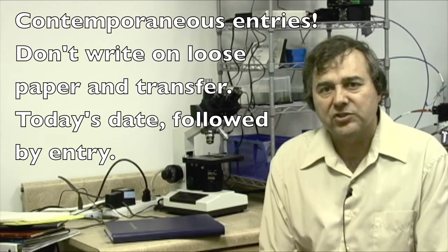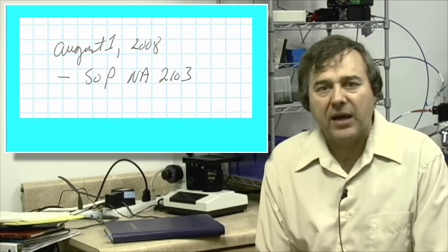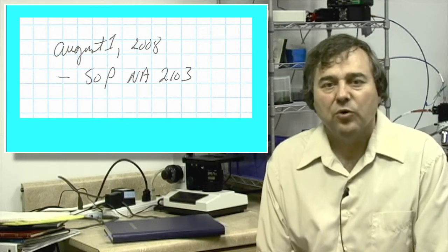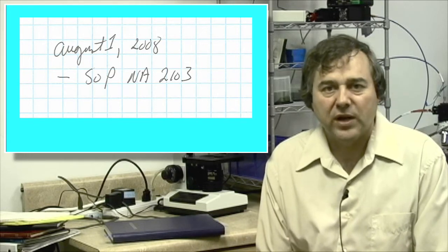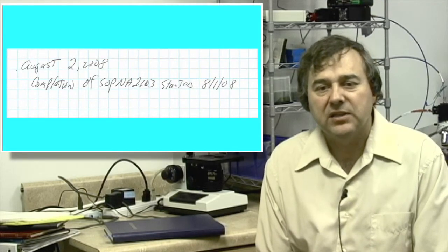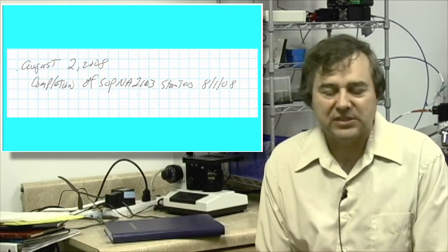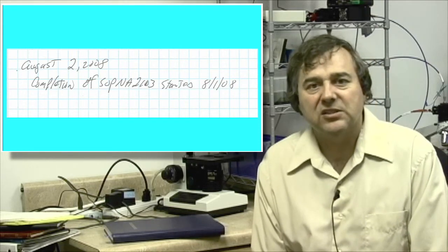And the third day we got the data back. We would have all three dates, and they would be referenced in a nested fashion. So we might have today's date, and then beneath that the SOP. And then tomorrow, we would put tomorrow's date first, and then beneath that we would say this is a continuation of the SOP began the previous day.